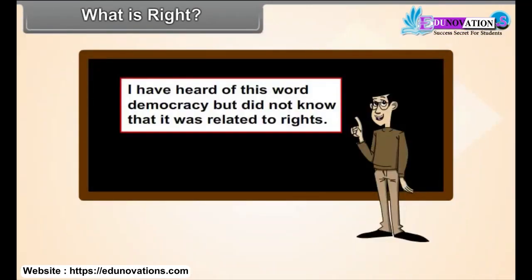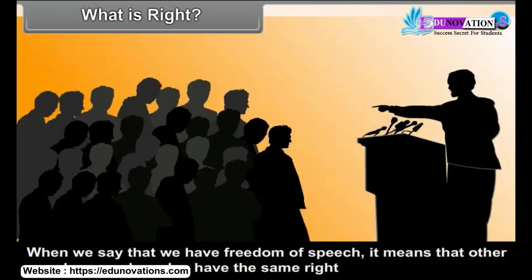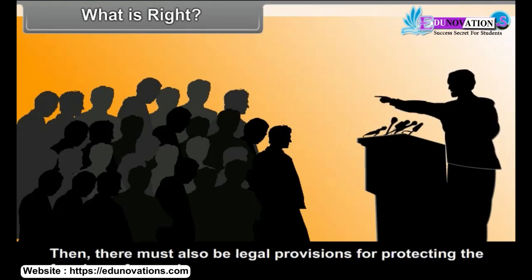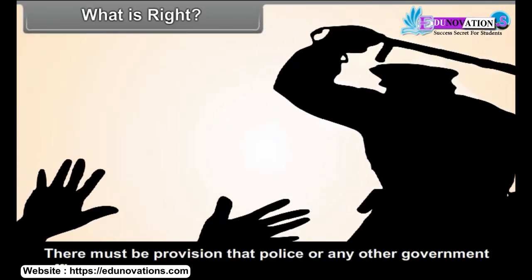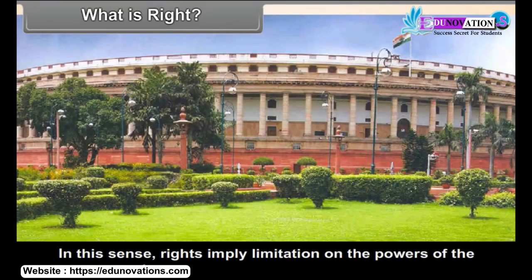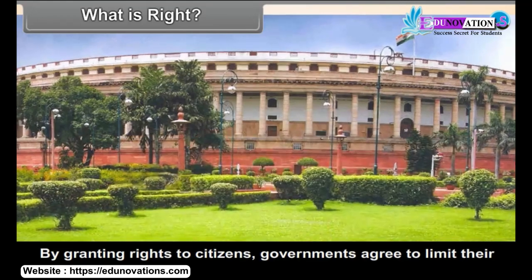I had heard of this word democracy, but did not know that it was related to rights. Must find out the rights of people in different democracies. When we say that we have freedom of speech, it means that other people around us also have the same right and we all agree that we can freely express our opinions. There must also be legal provisions for protecting the freedom of speech — provision that police or any other government officers cannot unnecessarily restrict our right to express our views. In this sense, rights imply limitations on the powers of the government. By granting rights to citizens, governments agree to limit their powers.